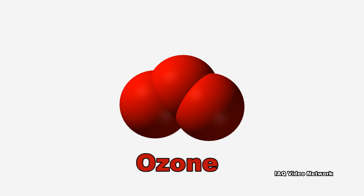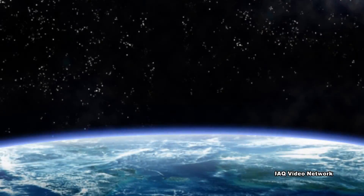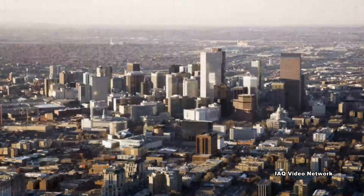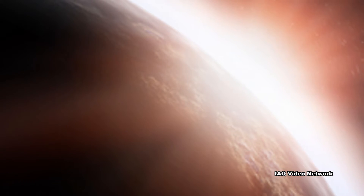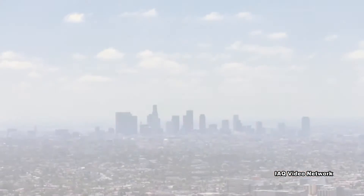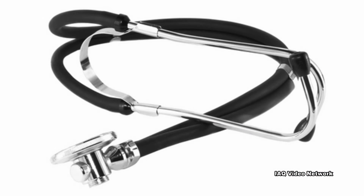Ozone is found in two regions of the Earth's atmosphere: at ground level and in the upper regions of the atmosphere. Both types of ozone have the same chemical composition, and while upper atmospheric ozone protects the Earth from the sun's harmful rays, ground level ozone is the main component of smog and can cause health concerns.